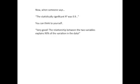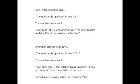Now, when someone says, the statistically significant R squared was 0.9, you can think to yourself, very good, the relationship between the two variables explains 90% of the variation in the data. And when someone else says, the statistically significant R squared was 0.01, you can think to yourself, who cares if that relationship is significant? It only accounts for 1% of the variation in the data. Something else must explain the remaining 99%.